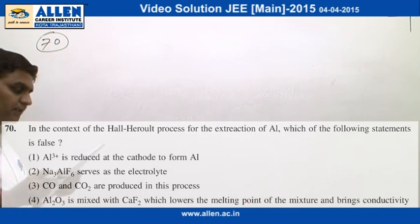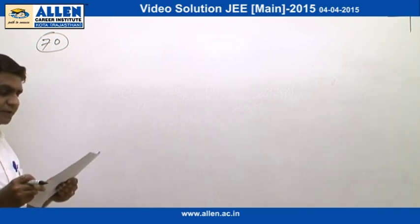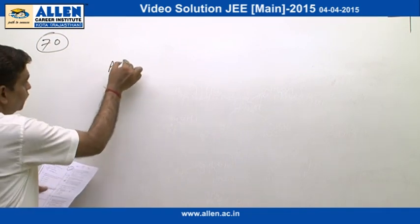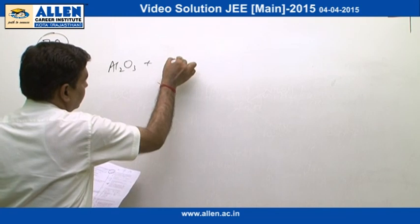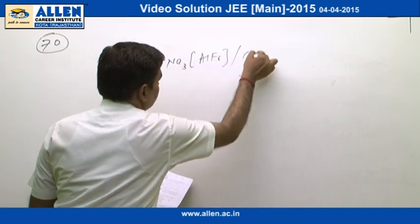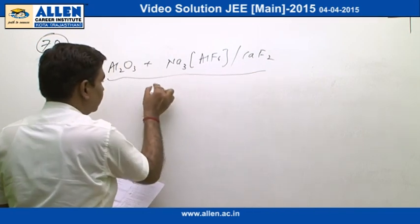of the Hall-Héroult process for the extraction of aluminum, which of the following statement is false? In the Hall-Héroult cell, Al2O3, cryolite, and fluorspar are used as electrolyte.